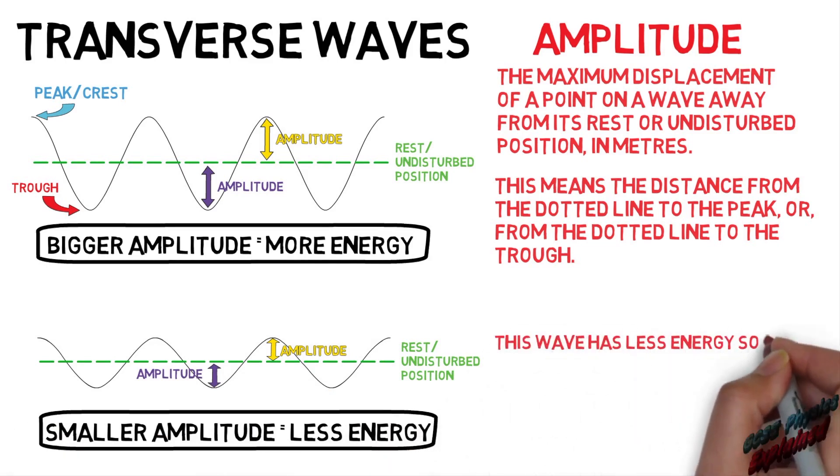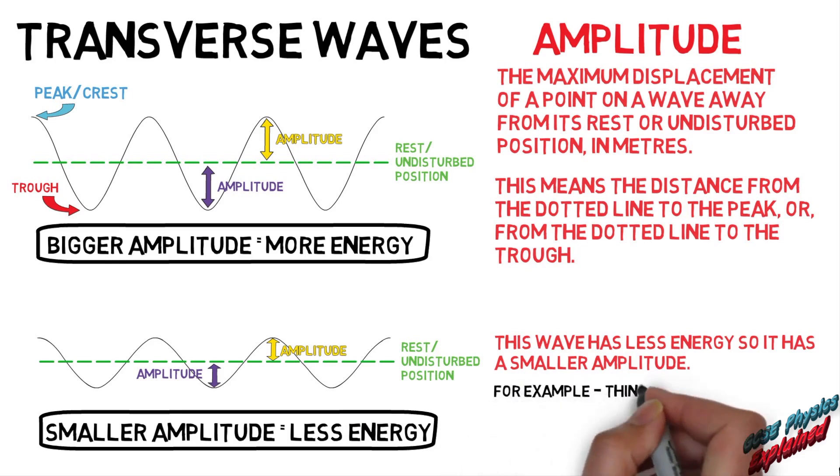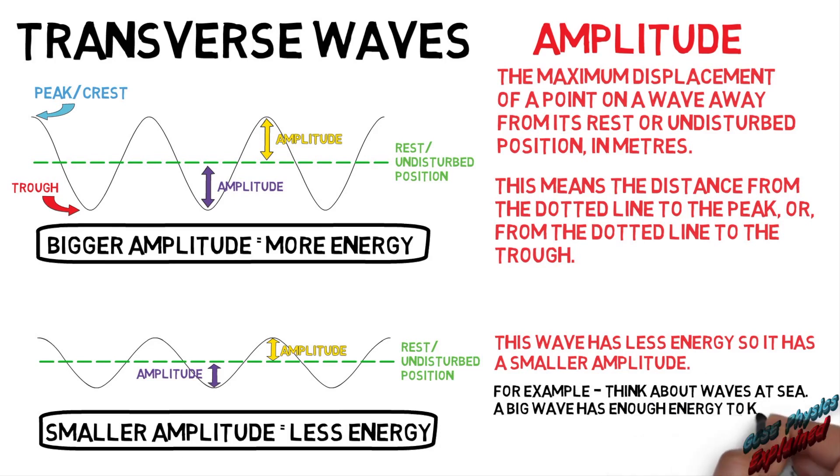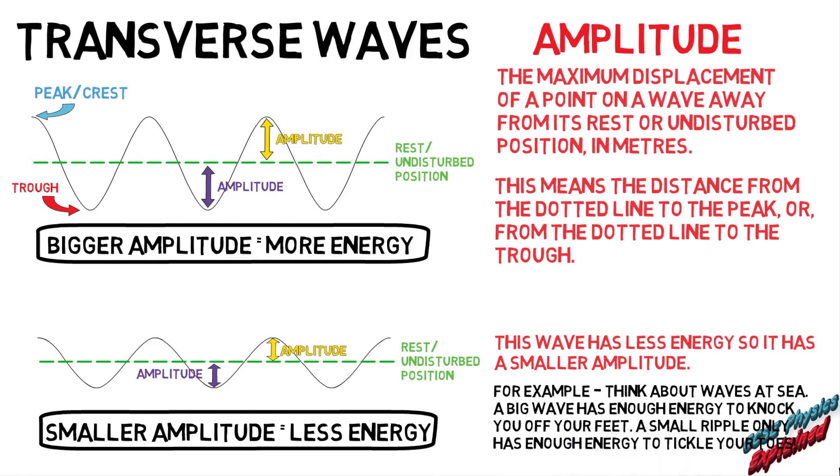This wave has less energy, so it has a smaller amplitude. For example, think about waves at sea. A big wave has enough energy to knock you off your feet. A small ripple only has enough energy to tickle your toes.